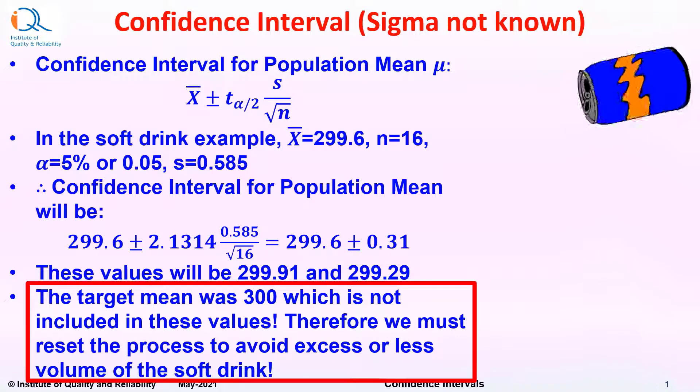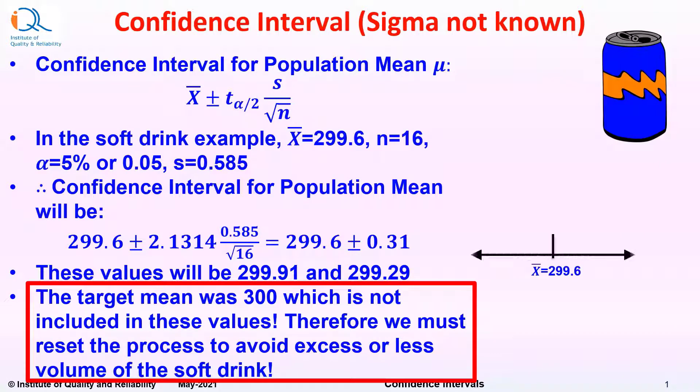Now note that the target mean was 300 which is not included in these two values. Therefore, we must reset the process to avoid excess or less volume of the soft drink.